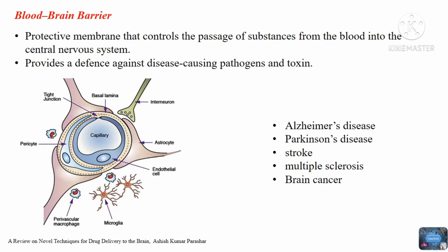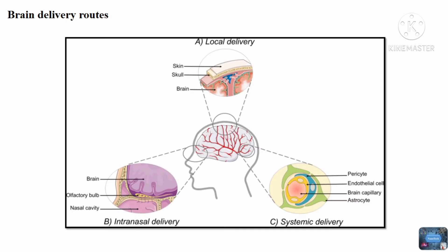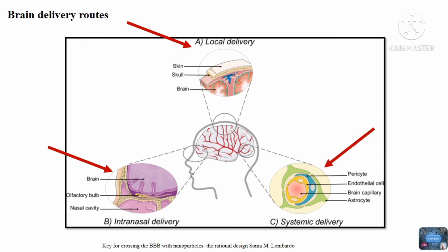There are different strategies for delivering drugs to the brain. These include local delivery, which is the direct delivery method where drugs are delivered directly to the brain via catheter or injection, or using a convection-enhanced delivery system. Another strategy is bypassing drugs through the intranasal route, though this has certain limitations. The systemic pathway is the most popular and well-studied delivery route, which increases the ability of drugs to cross the blood-brain barrier.